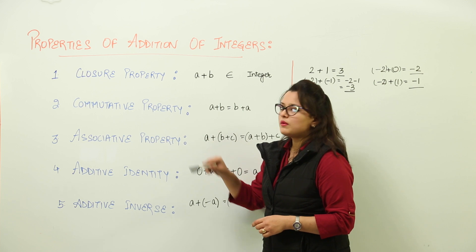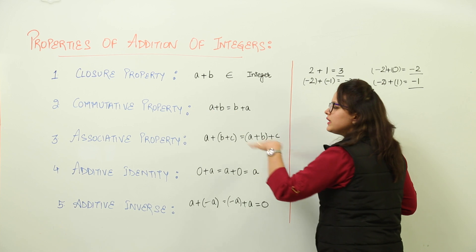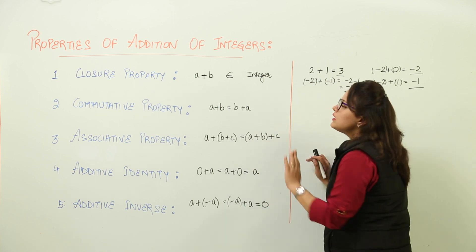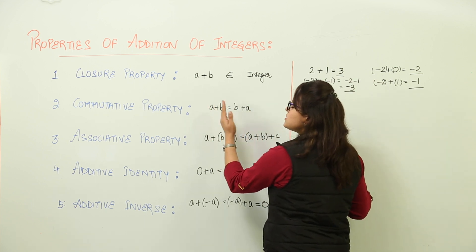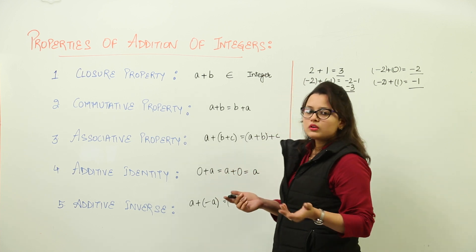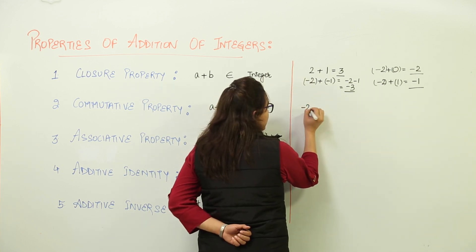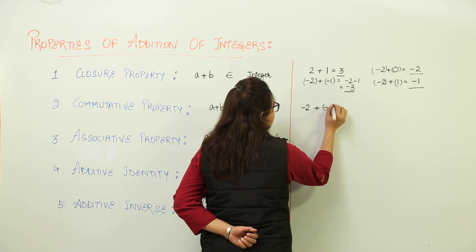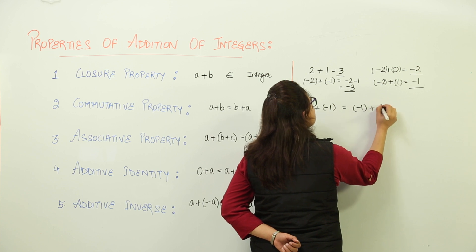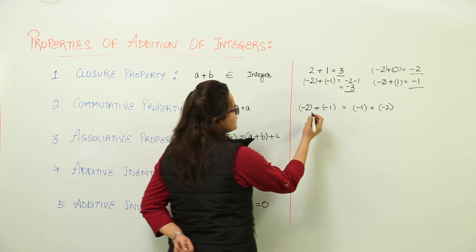The next is the commutative property. In the commutative property, the order of addition is not important. Whether you add the first integer with the second integer or you add the second to the first one, it will not matter at all. Let us say I am adding minus 2 plus minus 1, whereas on the other side, I want to add minus 1 and minus 2. Now I have reversed the order of addition.